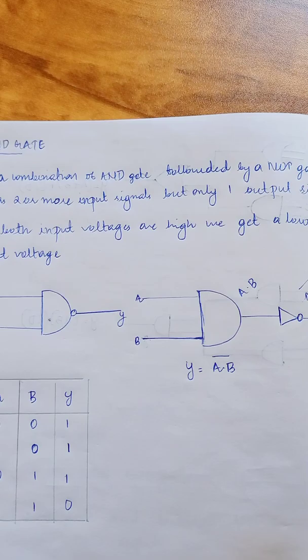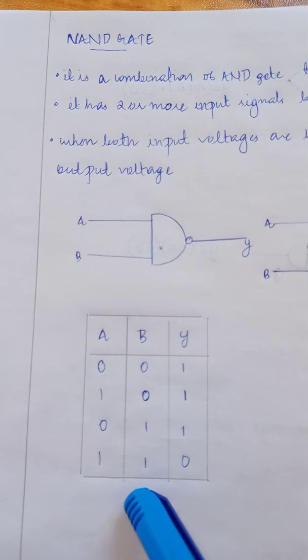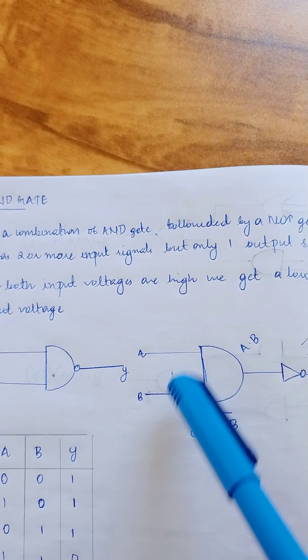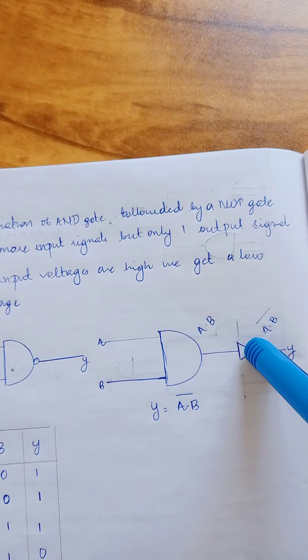Let's check out the truth table of the NAND gate. When A and B are 0, A dot B is 0. The output voltage is A dot B whole bar, which will be 1.